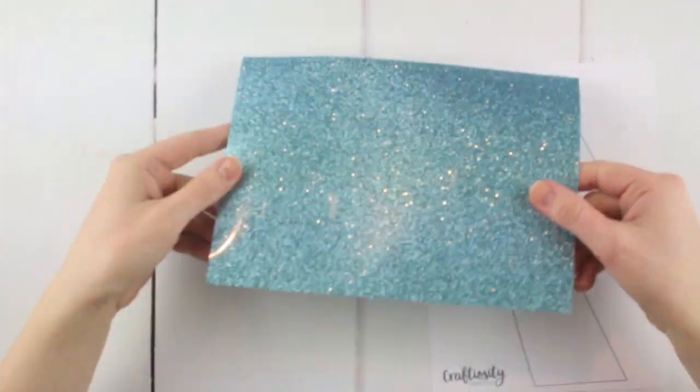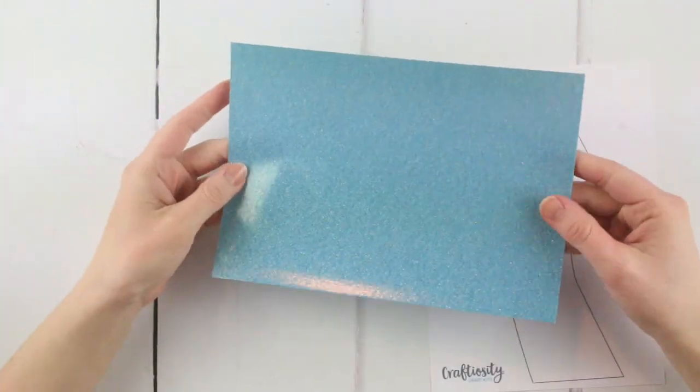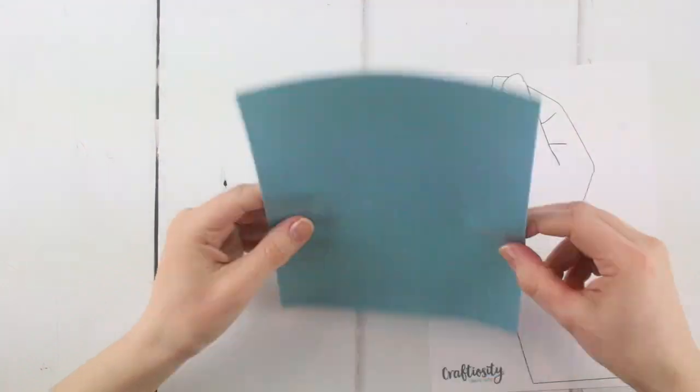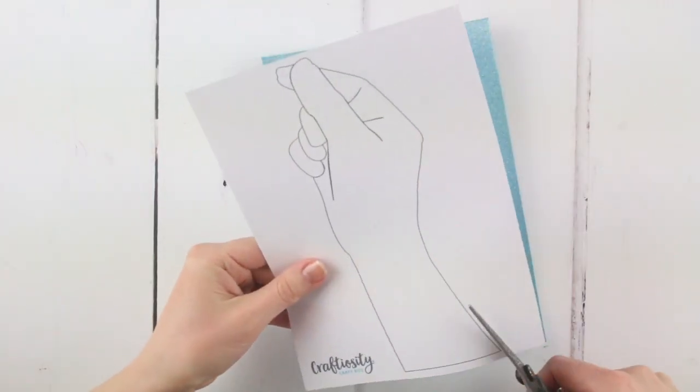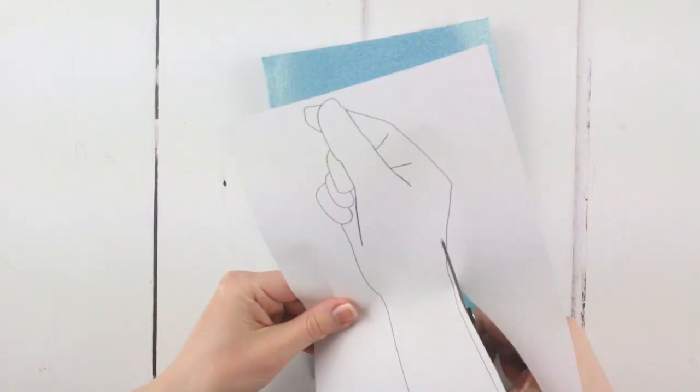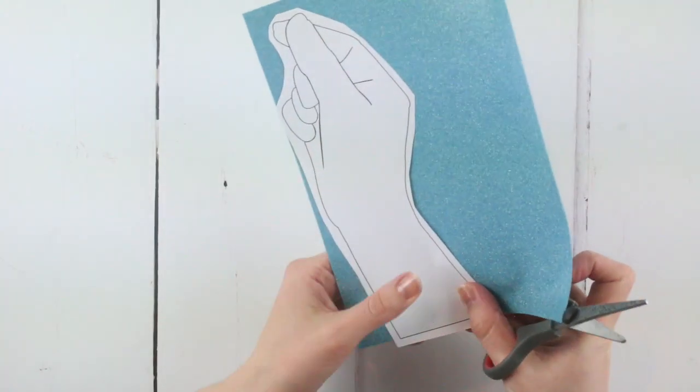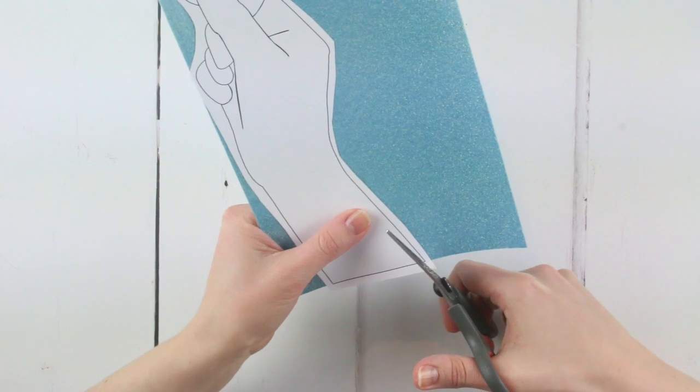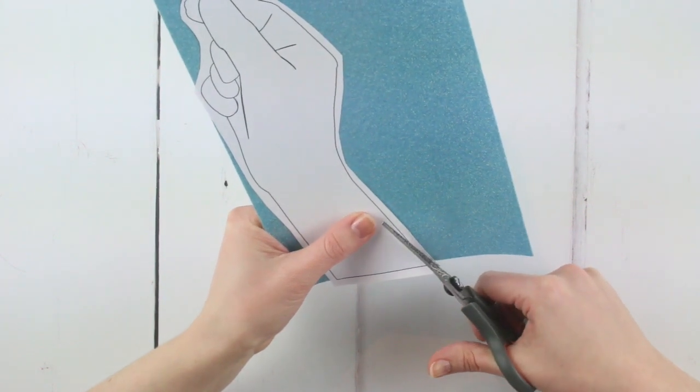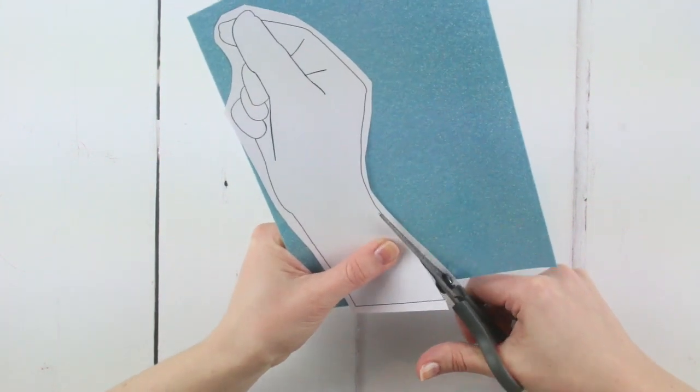Have a look at the glittery iron-on foil. You'll see that one side is sparkly, that's the front, and the back is quite matte. Before you cut the foil, roughly cut out the hand template from the piece of paper so it's easier to handle. Place the hand on top of the back, that's the matte side of the foil. Then cut out along the outside line of the hand.